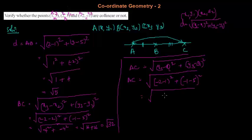(-2-1)² plus (-1-5)². Which equals square root of (-3)² plus (-6)². 6 squared is 36, -6 squared is also 36, and 3 squared is 9. So I get √45.